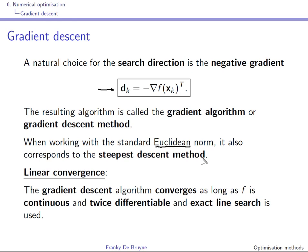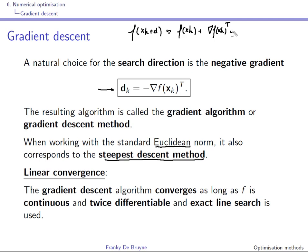Using the standard Euclidean norm, this corresponds to a steepest descent method. Starting at intermediate solution x_k, we want to find a direction d such that f(x_k + d) decreases with the steepest rate. Using a linear (first-order Taylor) approximation, f(x_k + d) ≈ f(x_k) + ∇f(x_k)ᵀ d, valid for small ‖d‖.